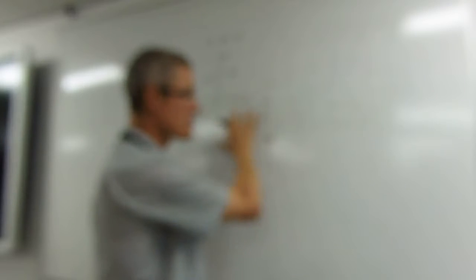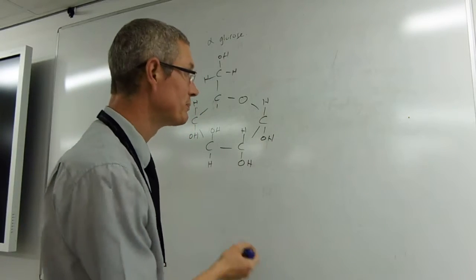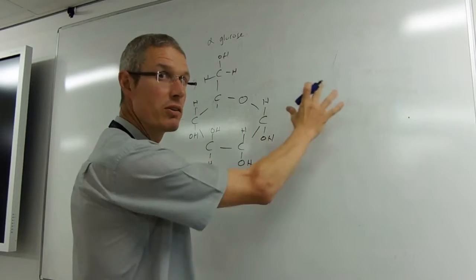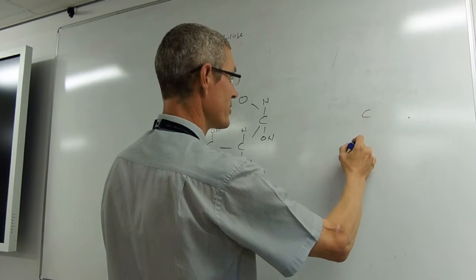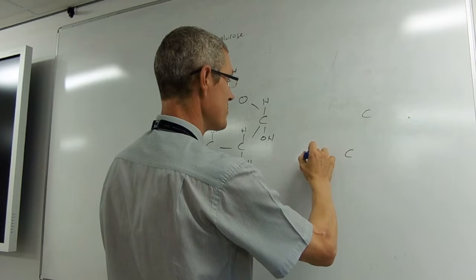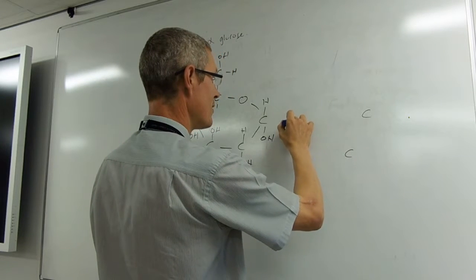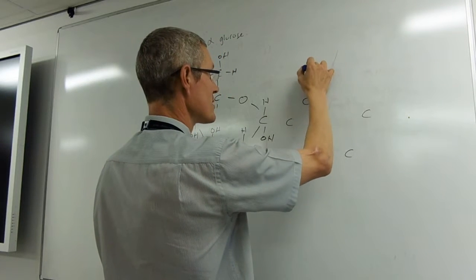What we're going to make is a disaccharide. So this is a monosaccharide. Mono, one. We make a disaccharide. And we're just going to make maltose, which is two of these bonded together. So I need to draw another one just over here. So I'm going to draw the same thing. That's good practice for drawing. There's my six carbon chain.